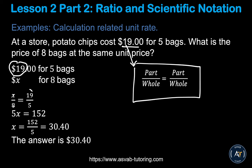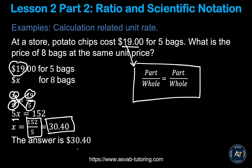Cross-multiplying gives you 5x equals 152. Dividing both sides by 5 gives x equals 152 divided by 5, which is 30.40. So the answer is $30.40 for eight bags.